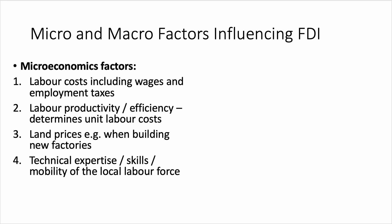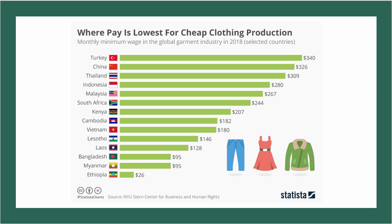An interesting example is where to manufacture clothing. Looking at monthly minimum wages in the garment industry across selected countries: Turkey is a major garment producer, as is China, but these days their monthly minimum wages are significantly higher than countries such as Myanmar, Bangladesh, Ethiopia, and even Vietnam. We're seeing a shift of manufacturing FDI away from China, Thailand, and Indonesia — where minimum wages are higher — shifting to countries where unit labor costs are significantly lower.